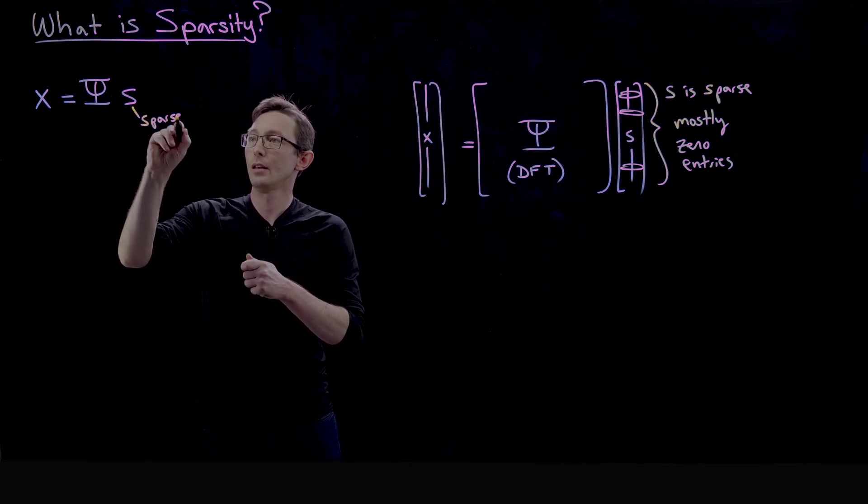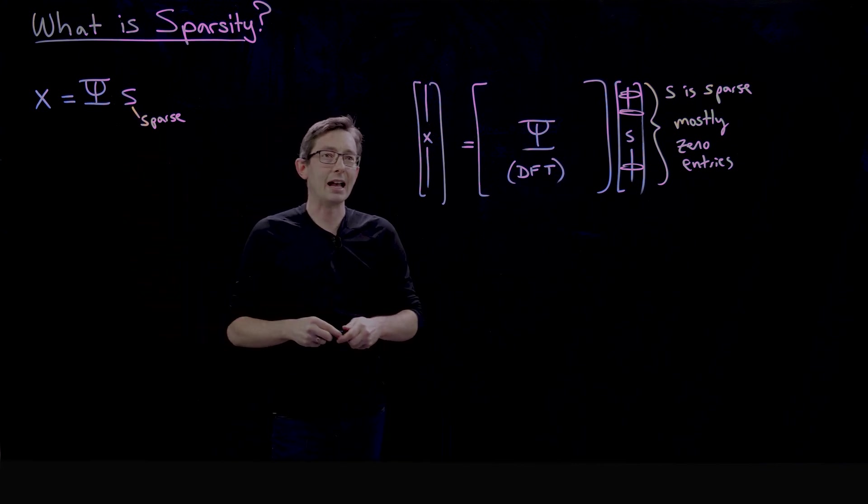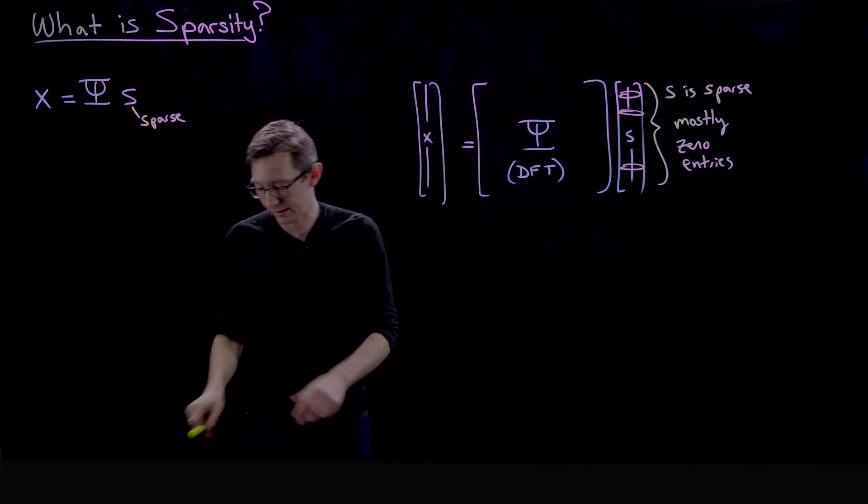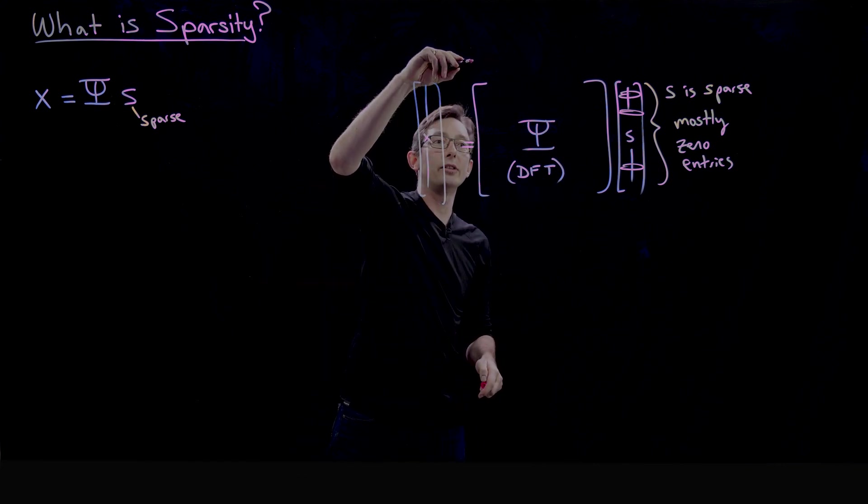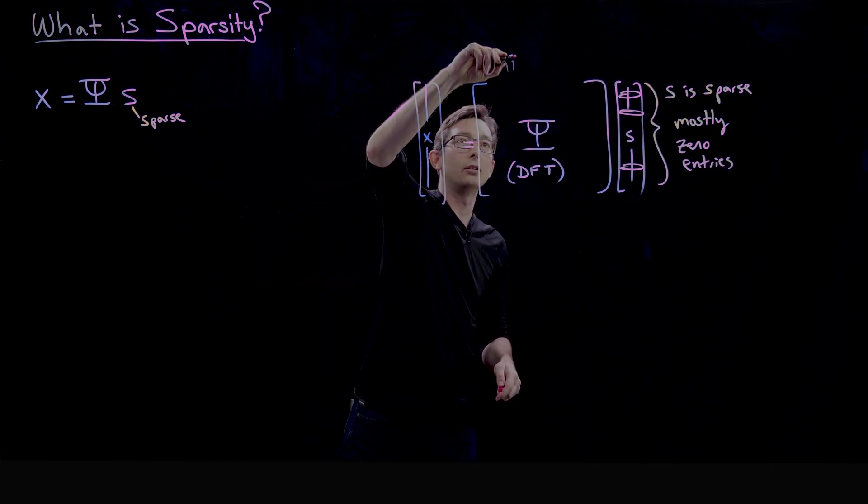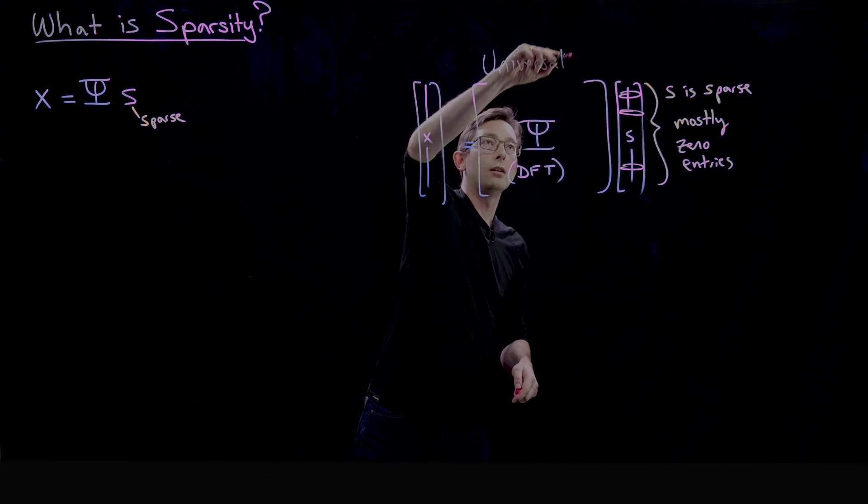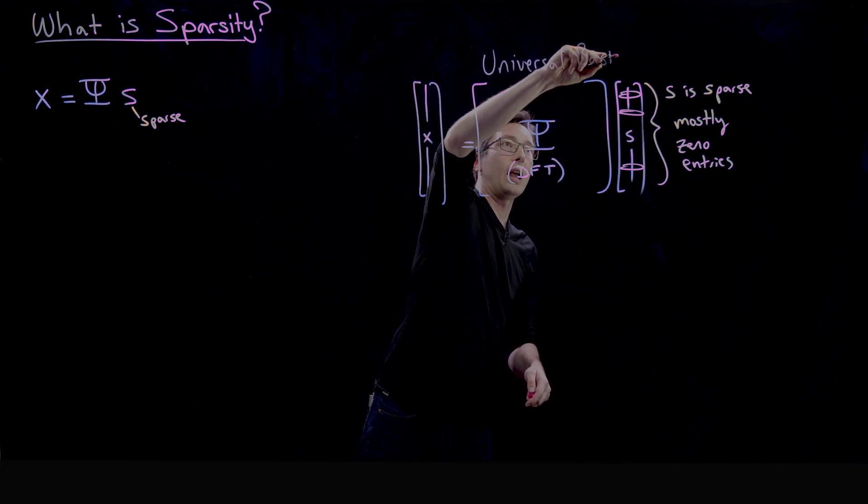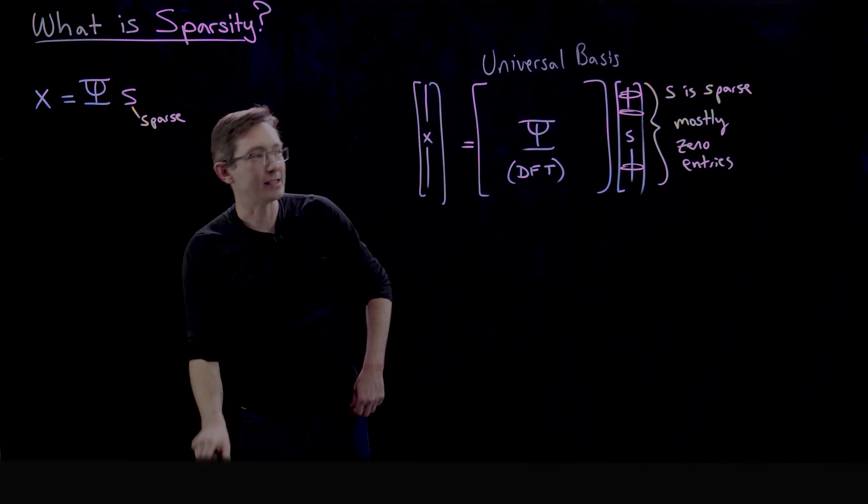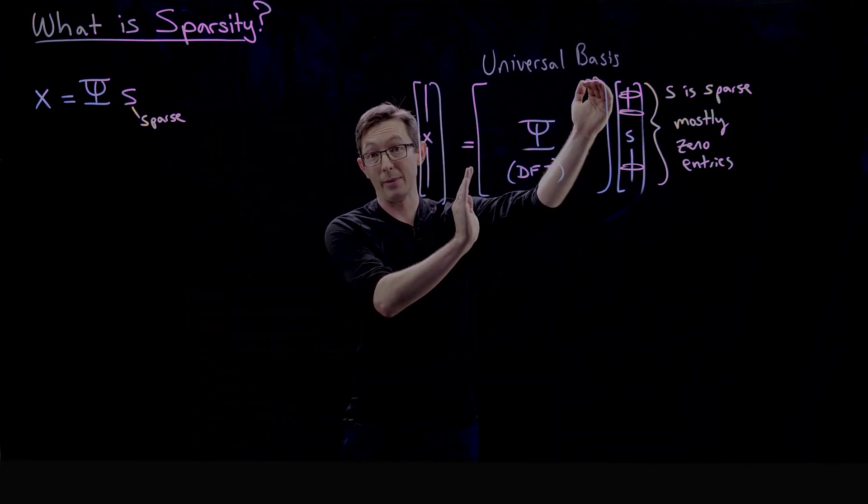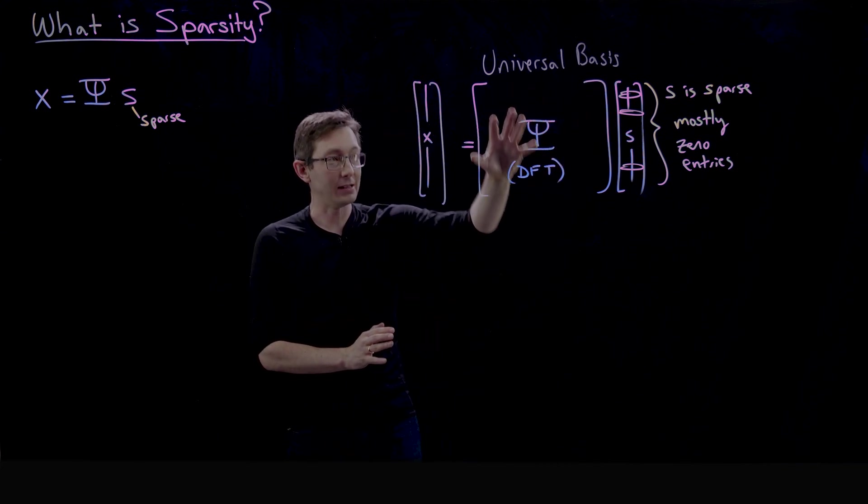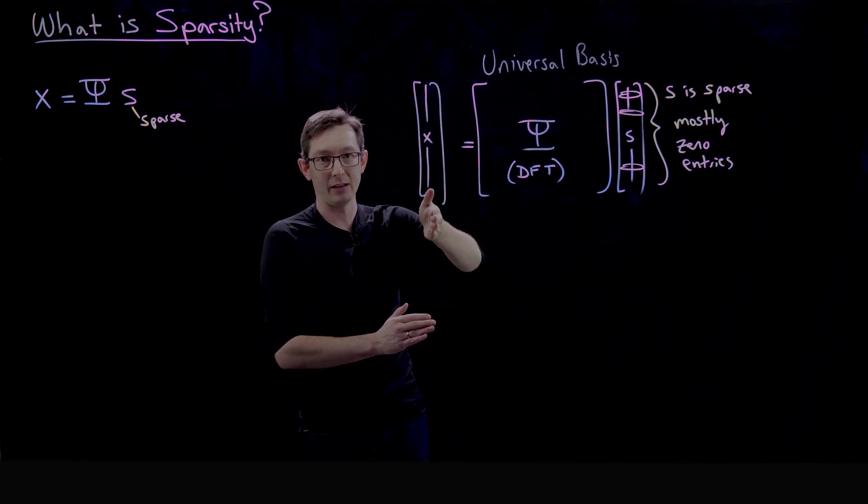And we're gonna call ψ a universal basis. So this is what I mean—I'm gonna call this a universal basis. This is an n by n humongous square matrix. That square matrix, let's say these are megapixel images—this is a million by million basis.